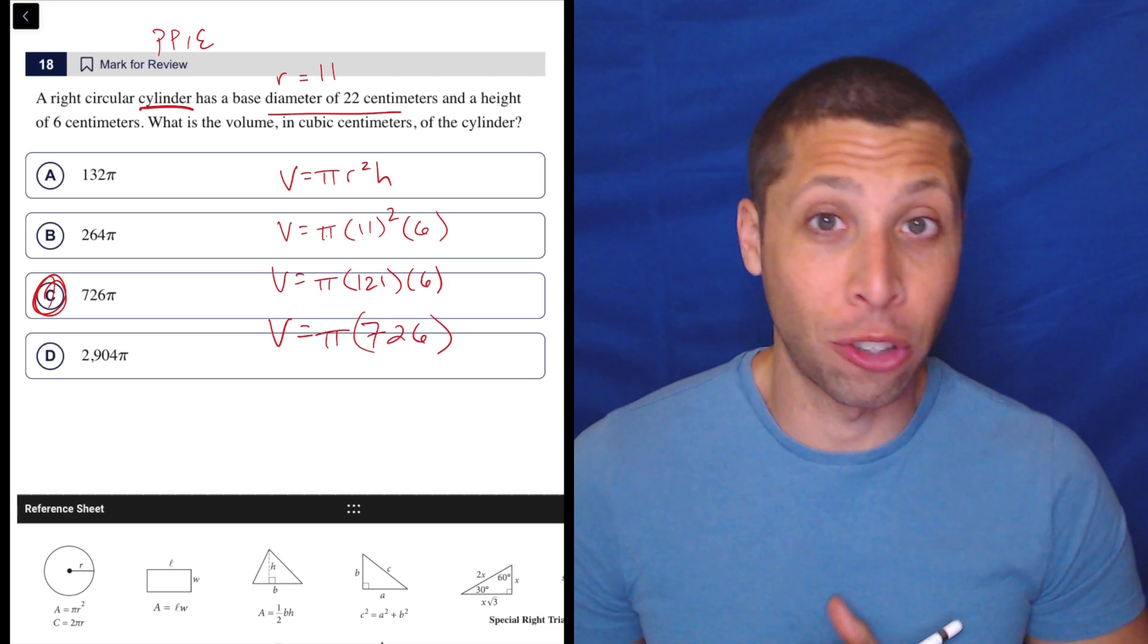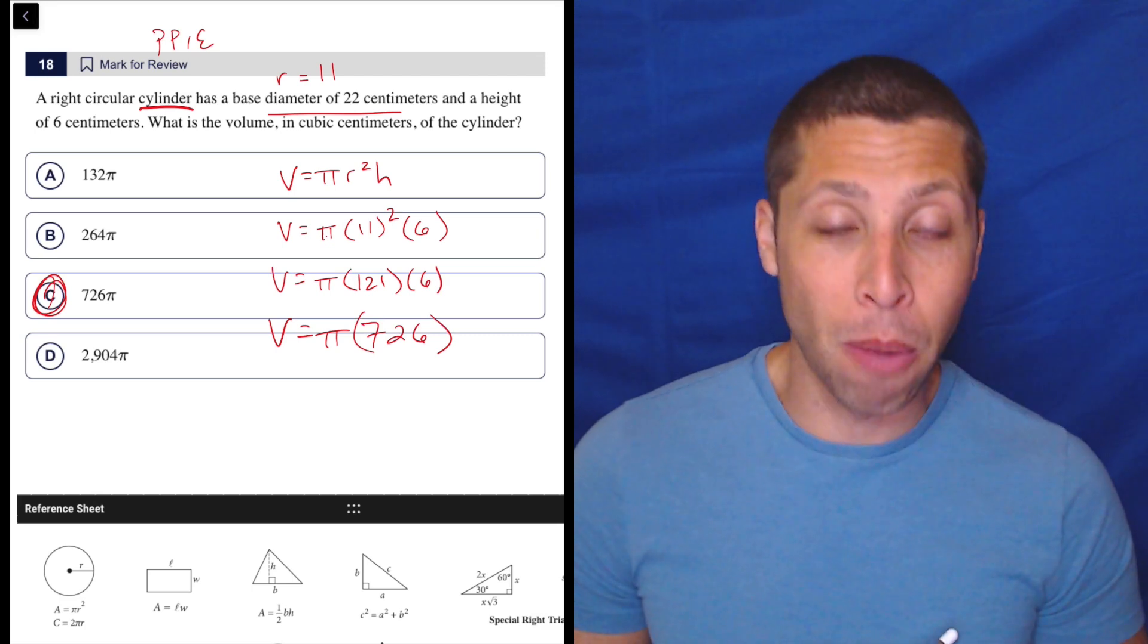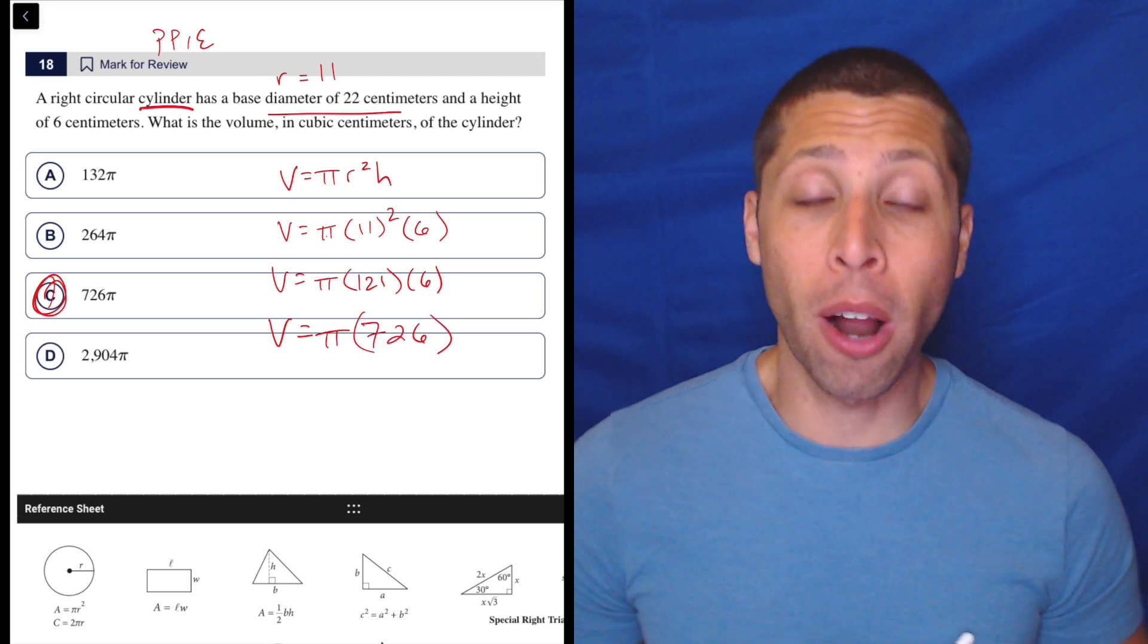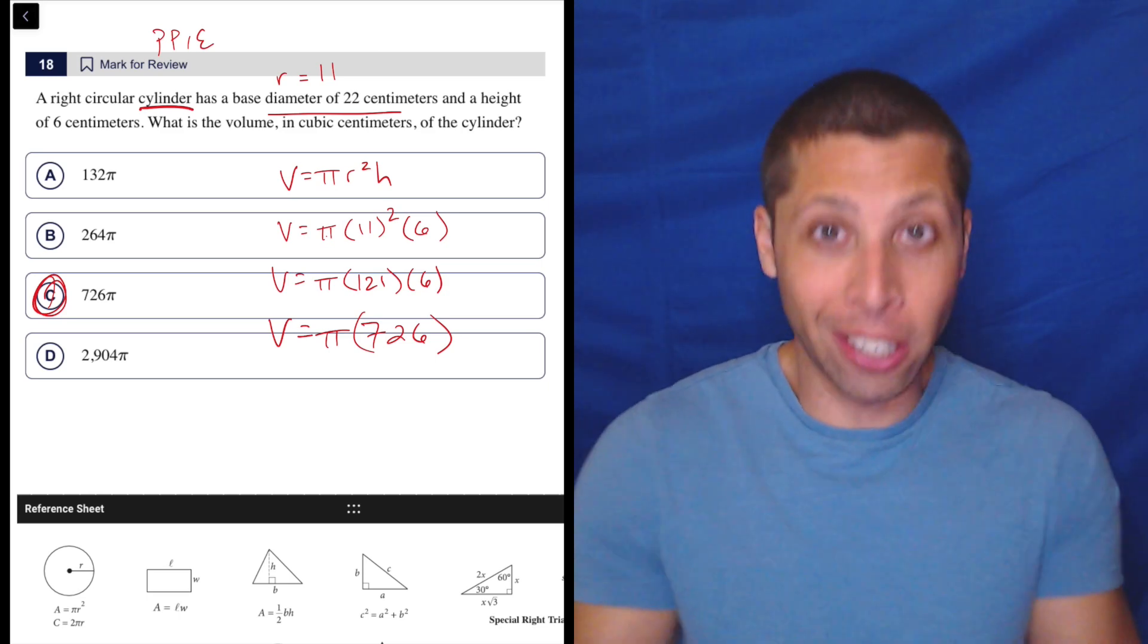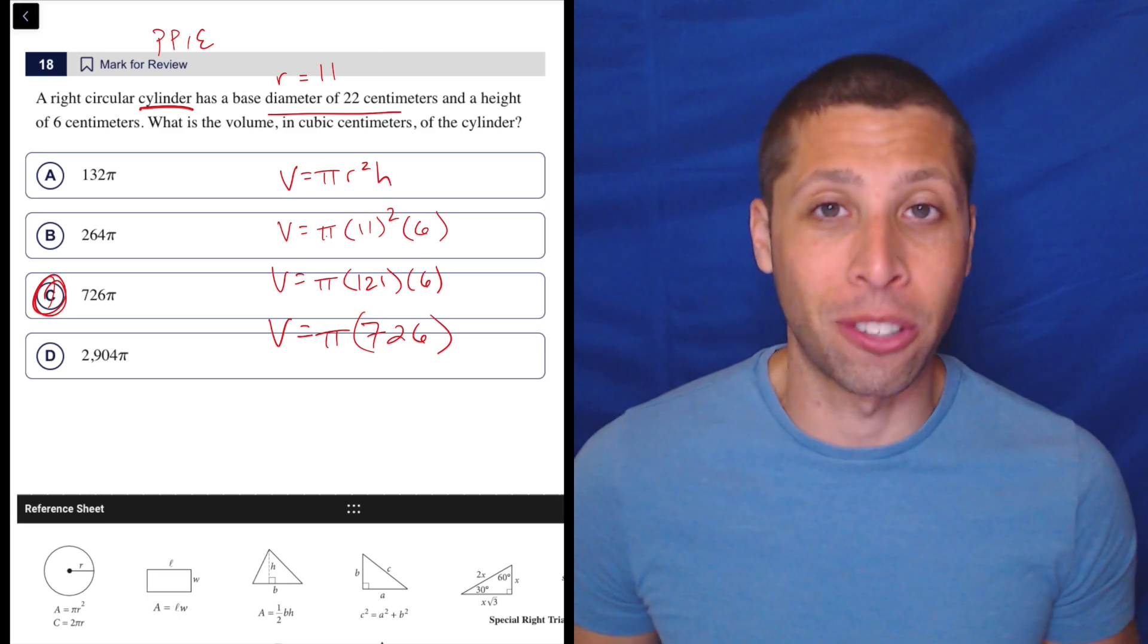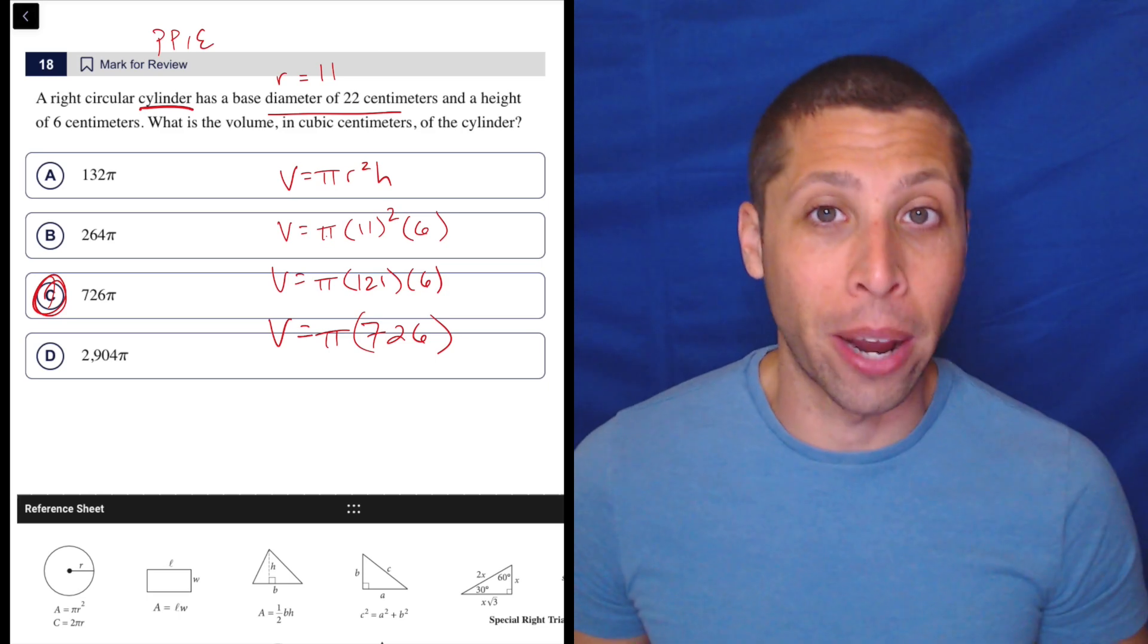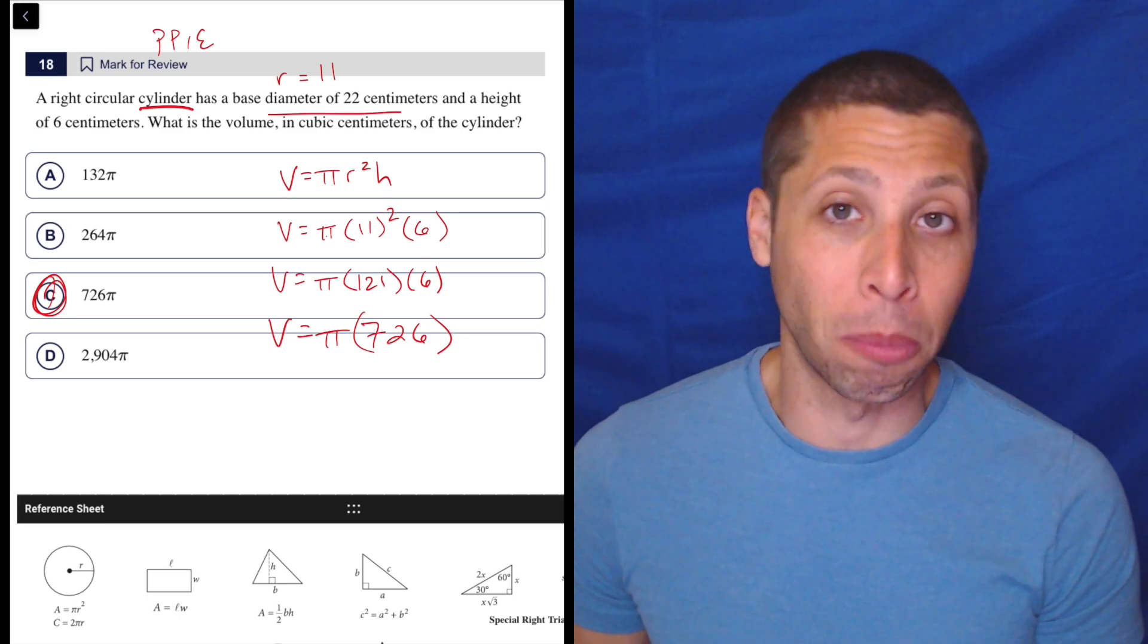So just remember that the reference chart exists. You do not need to memorize most geometry formulas. So if you got this wrong because you forgot the volume of a cylinder, just here you go. There's a chart. It gives it all to us. So look for that little button in the top right of your Blue Book app, and you'll get all the formulas you need.